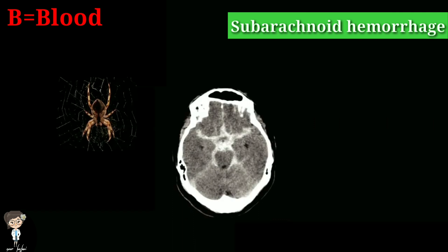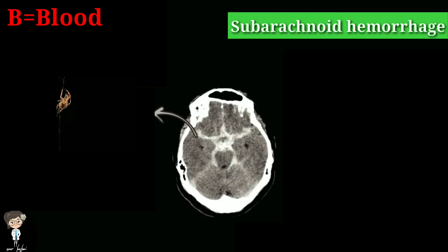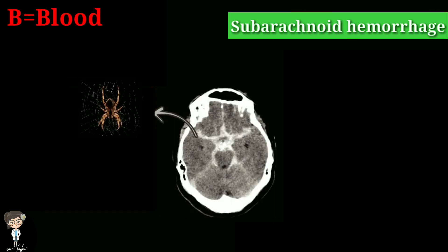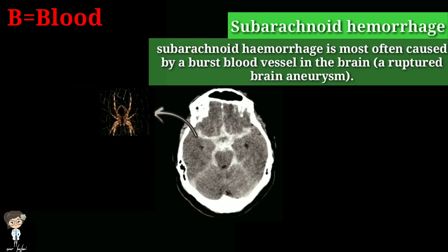Next is subarachnoid hemorrhage, which is mostly caused by a burst of blood vessels in the brain, also called a brain aneurysm. Its shape looks like a spider, hence called subarachnoid. Other causes of subarachnoid hemorrhage include trauma and tumors.